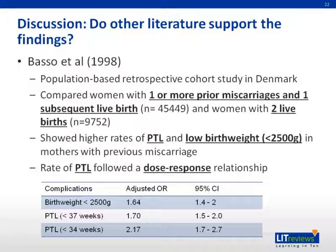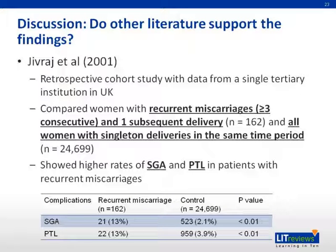A study done by Basso in 1998, a population-based retrospective cohort study in Denmark comparing women with one or more previous miscarriages to women with none, also showed higher rates of preterm labor and low birth weight. A study by Givrash in 2001, a retrospective cohort study from a single tertiary institution in the United Kingdom, compared women with recurrent miscarriages — defined as three or more consecutive — to women without, and also showed higher rates of SGA and preterm labor in patients with recurrent miscarriages.